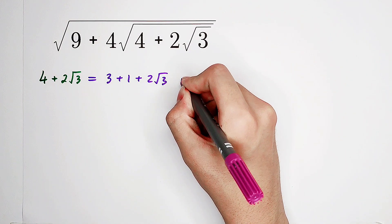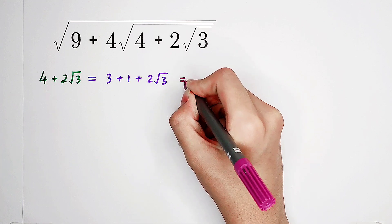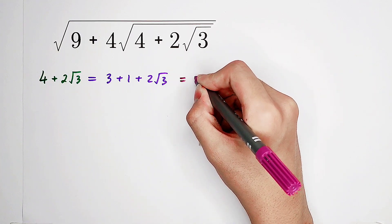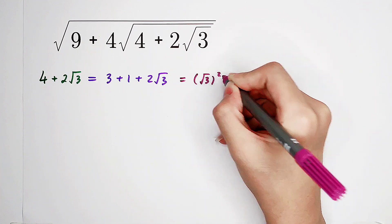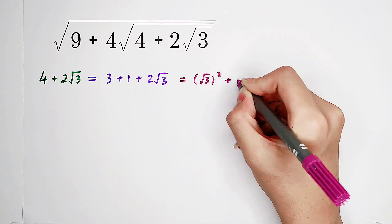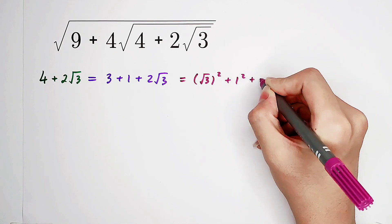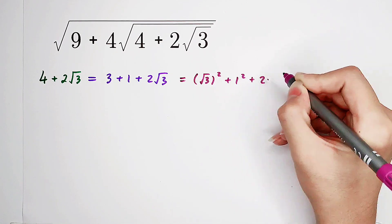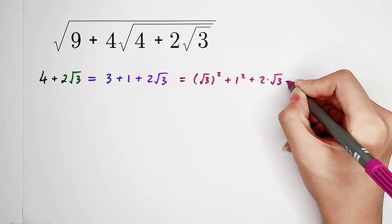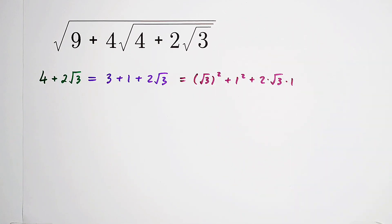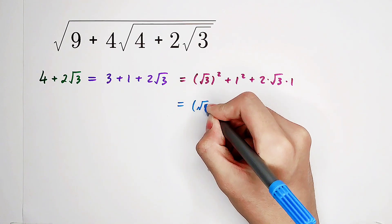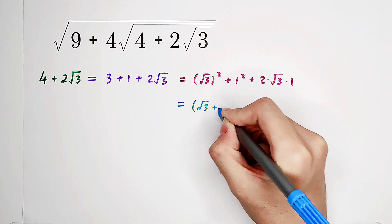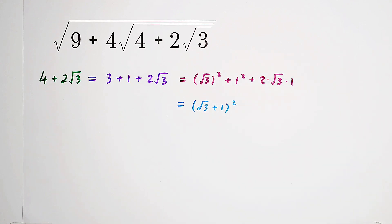And 3 plus 1: this 3 can be written as square root of 3, then squared. 1 is 1 squared, and this is 2 times square root of 3, then times 1. It is square root of 3 plus 1, all squared.